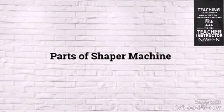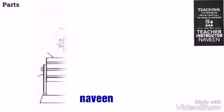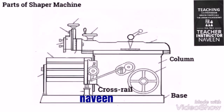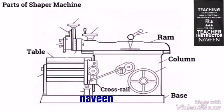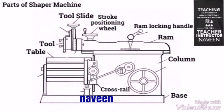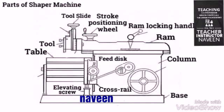The main parts of the Shaper Machine are: Base, Column, Cross Rail, Table, RAM, RAM Locking Handle, Stroke Positioning Wheel, Tool, Tool Slide, Feed Disc, and Elevating Screw.